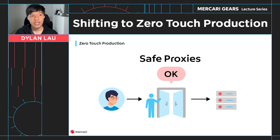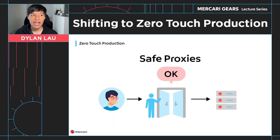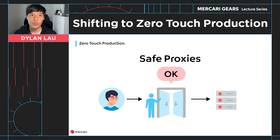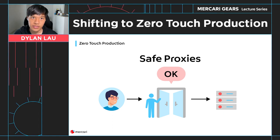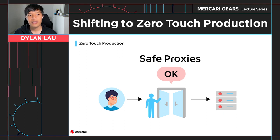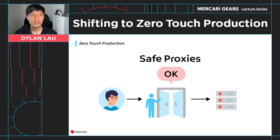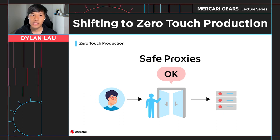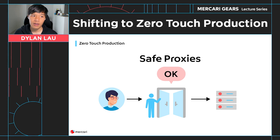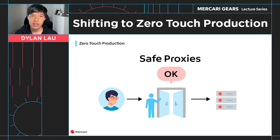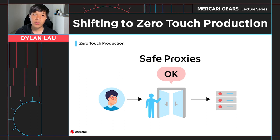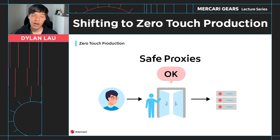Safe proxies are systems that sit between a user and the production environment and validate operations that a user wants to do in production. A safe proxy will ensure that changes to the production environment are audited and approved by someone else. A typical unrestricted production environment may grant engineers a broad range of permissions, meaning users can perform various operations without any peer reviews, with great risks if users turn malicious or their credentials are compromised. With safe proxies, we can mitigate these risks by requiring reviews for operations that modify the production environment. We require code reviews for code to enter production; similarly, we should require reviews for operations that affect production.